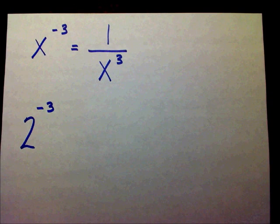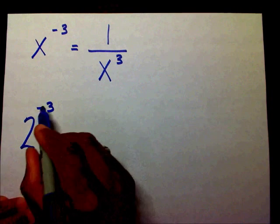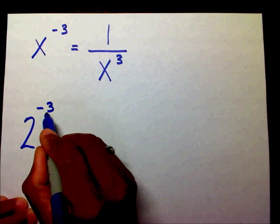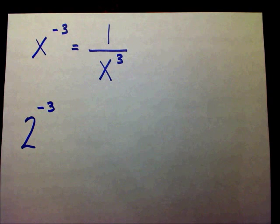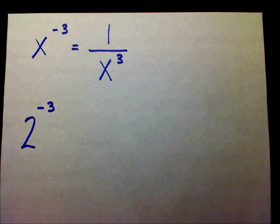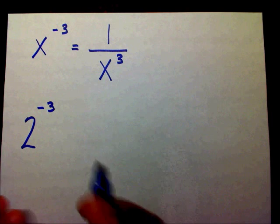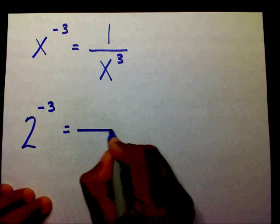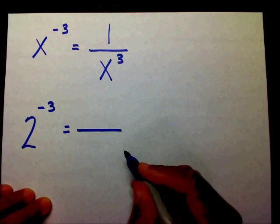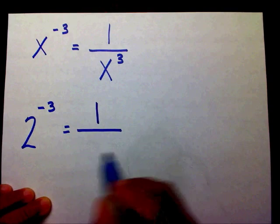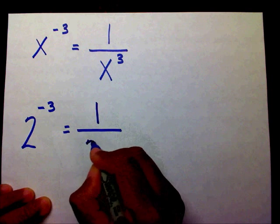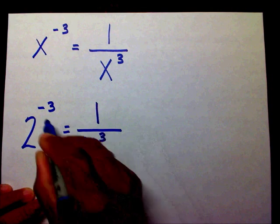Okay, 2 to the negative 3. When you see a negative exponent, you need to say: I can't have a negative exponent. So I want to create a fraction. I'm going to place a 1 in my numerator. And in my denominator, I'm going to write this power without the negative exponent.